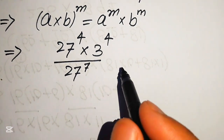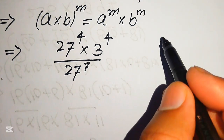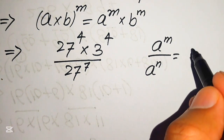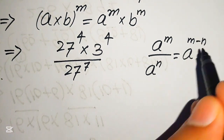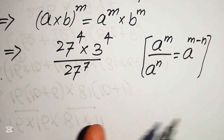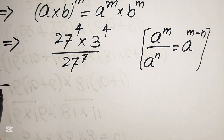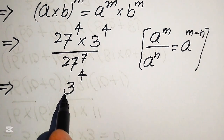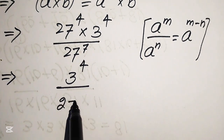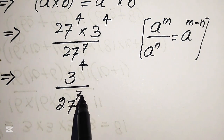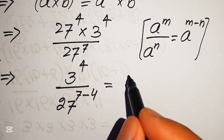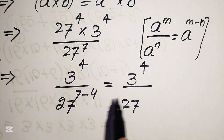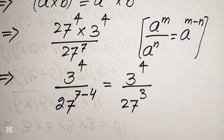We apply another exponent law: if we have a to the power of m divided by a to the power of n, we write it as a to the power of m minus n. We move the smaller exponent to the bigger exponent side, giving us 3 to the power of 4 divided by 27 to the power of 7 minus 4. Since 7 minus 4 equals 3, we get 3 to the power of 4 divided by 27 to the power of 3.